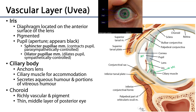In addition to the iris and the ciliary body, there is also a choroid layer. The choroid layer sits between the sclera and the retina, and it is very richly vascular.